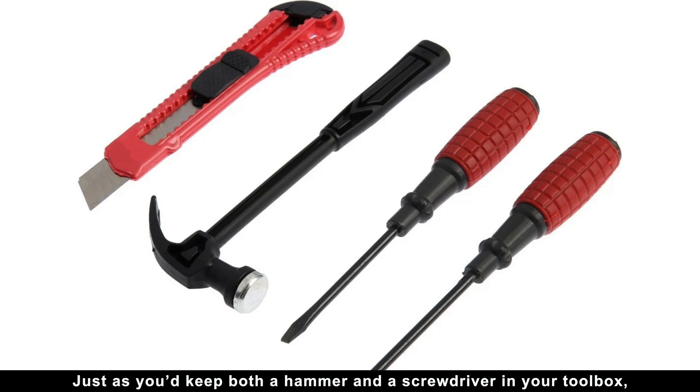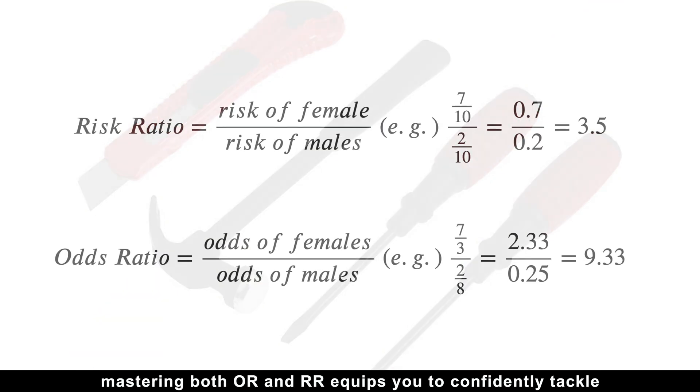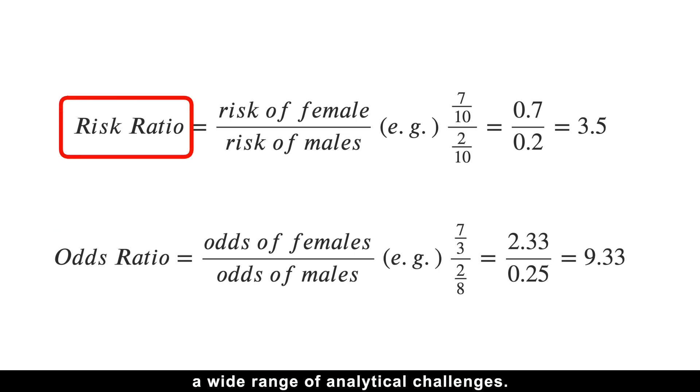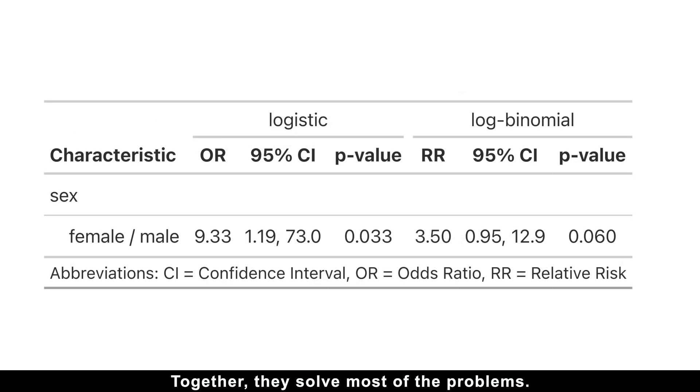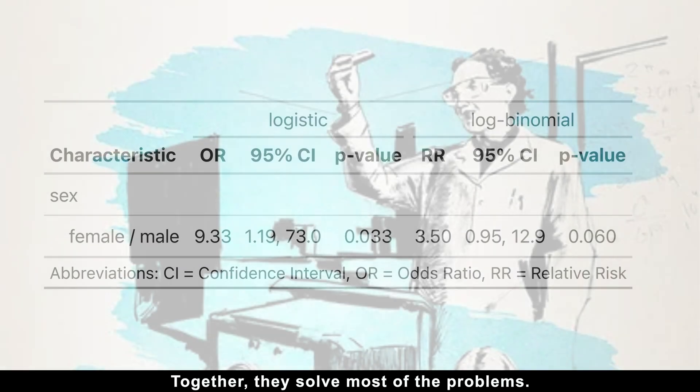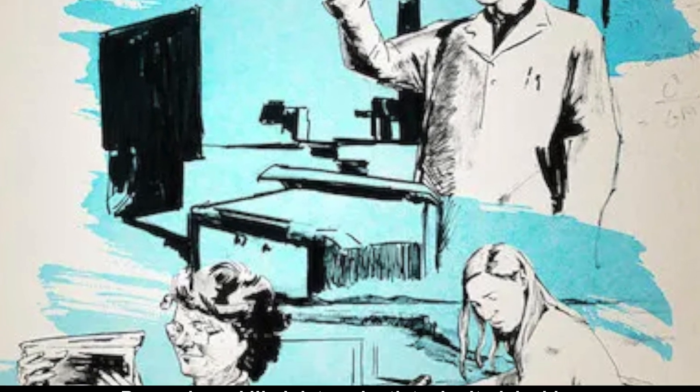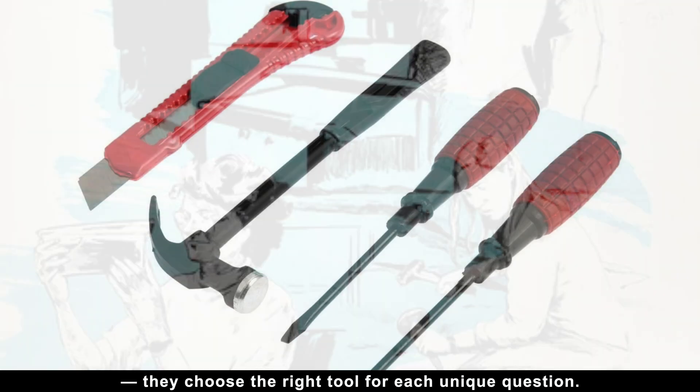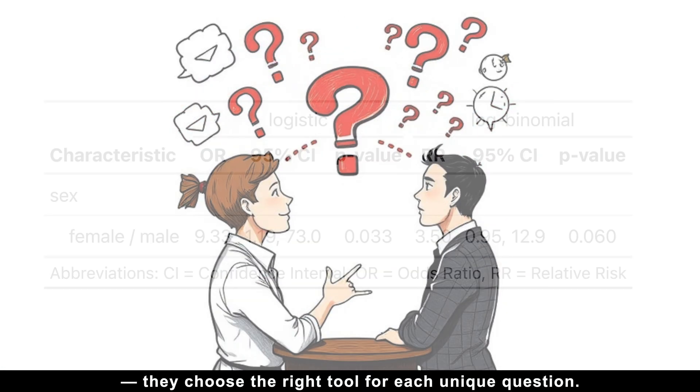Just as you'd keep both a hammer and a screwdriver in your toolbox, mastering both odds ratios and risk ratios equips you to confidently tackle a wide range of analytical challenges. Together, they solve most of the problems. Remember, skilled data scientists don't pick sides. They choose the right tool for each unique question.